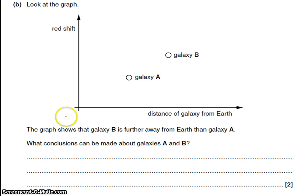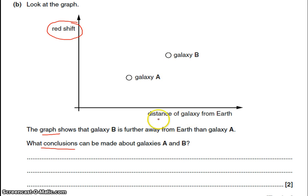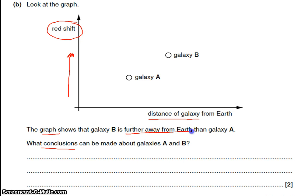This last question is also about redshift. The graph shows galaxy B is further away from the earth than galaxy A. What two conclusions can be made about galaxy A and galaxy B? Always look at the axes first: you have redshift and distance of the galaxy from Earth. Galaxy B has greater redshift than galaxy A because redshift increases with distance. The reason is that if a galaxy is more redshifted and further away, it has travelled further — and to travel a greater distance in the same period of time, it must be travelling faster. So galaxies further away from Earth are travelling faster than those closer to us.